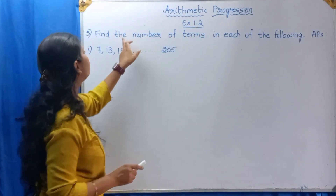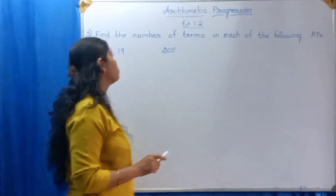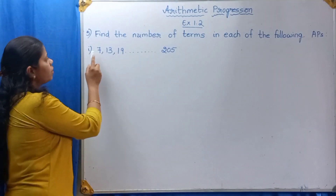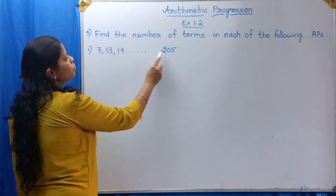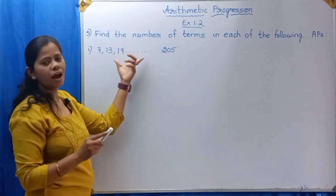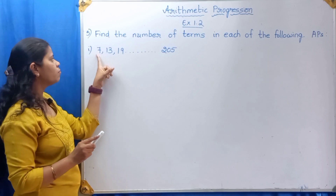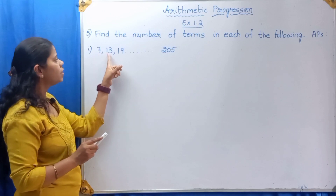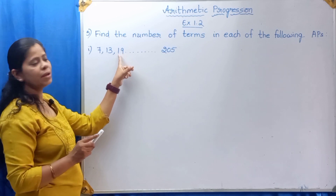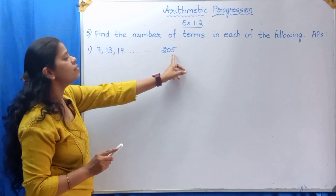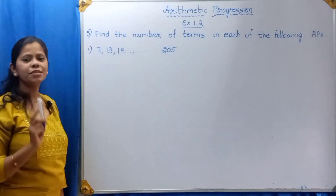Exercise 1.2. Find the number of terms in each of the following APs. Here the question is 7, 13, 19 up to 205. These numbers are in AP. This is the first term, this is the second term, this is the third term, and this is the last term of an AP.